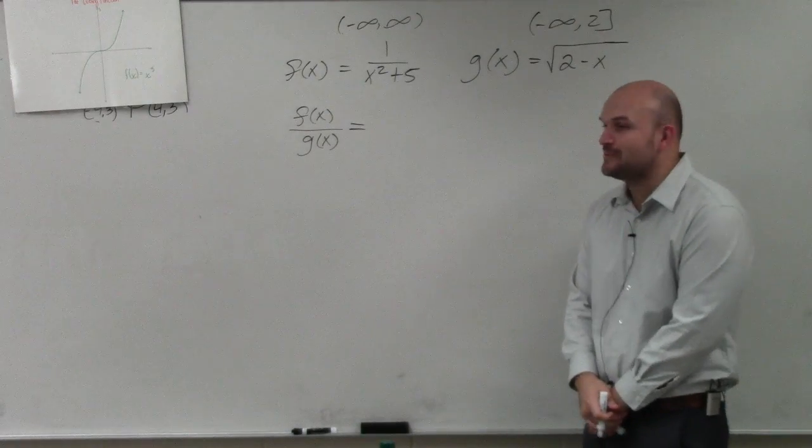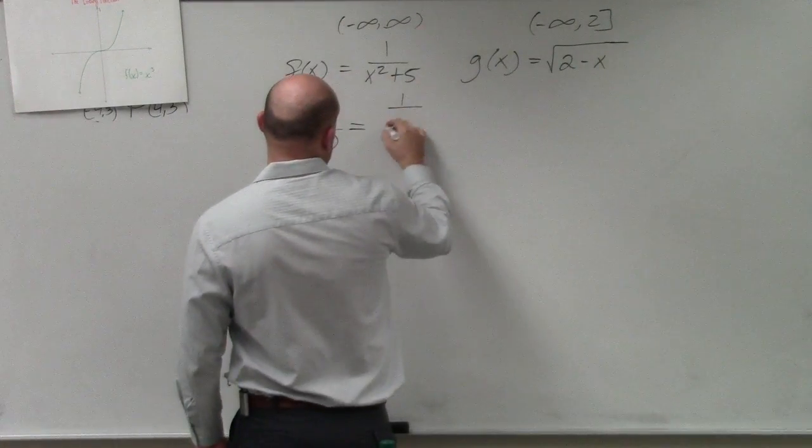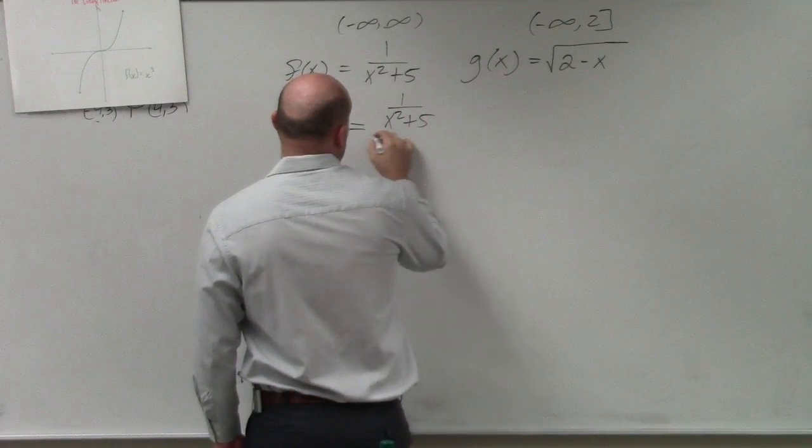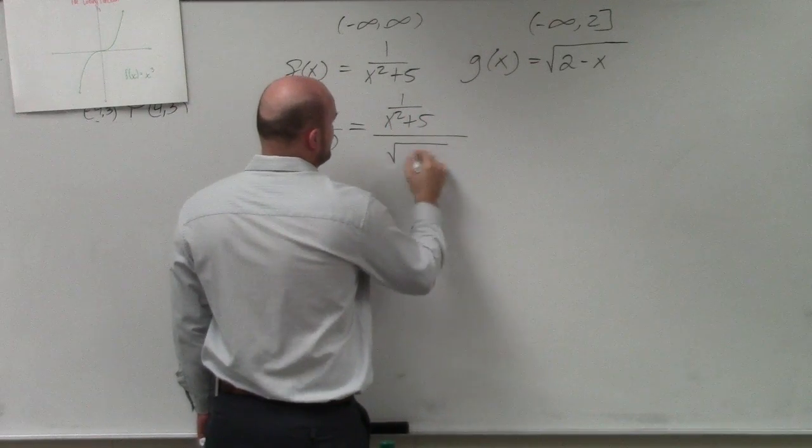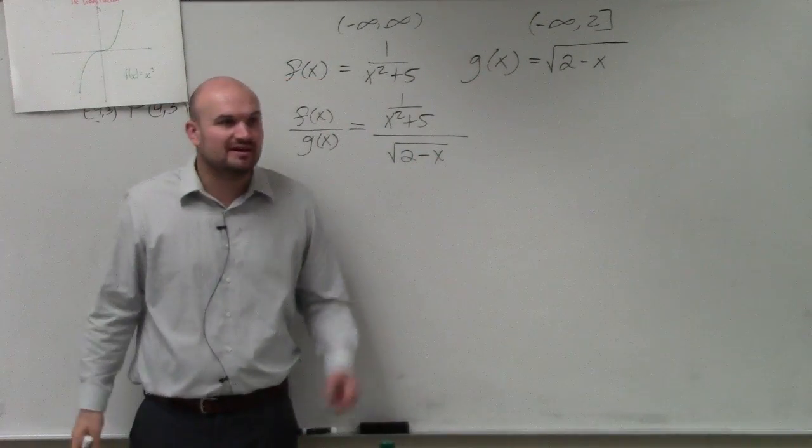All right, so in this example, we have f of x divided by g of x. So that's going to look something like this: f of x divided by g of x divided by square root of 2 minus x. This does not look fun at all, right?